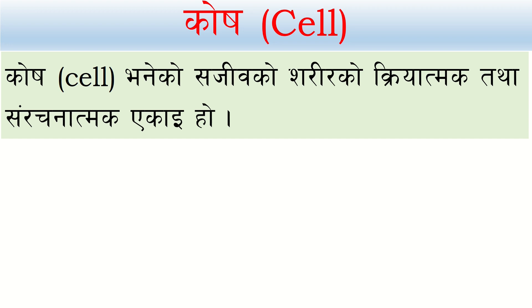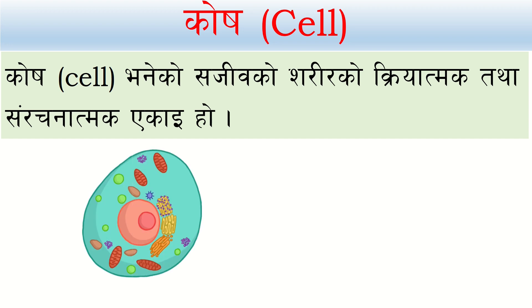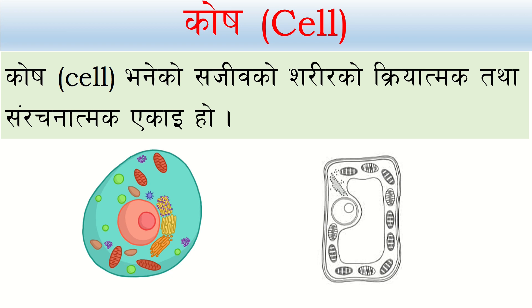This is the cell that we can see: the nucleus, the cell membranes, mitochondria, lysosome, ribosome, and the body. We can see this animal cell and this plant cell. In the animal cell, this cytoplasm will be filled with jelly-like liquid.